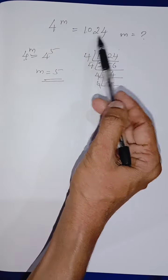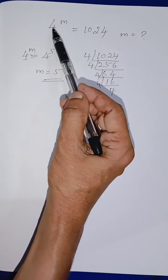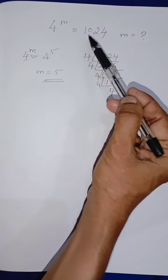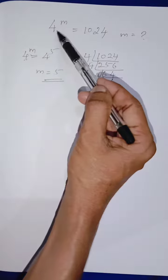4 to the power of m is equal to 1024. So here the base is 4 and the power is m. We want to find the power m. So change this 1024 into the base 4.